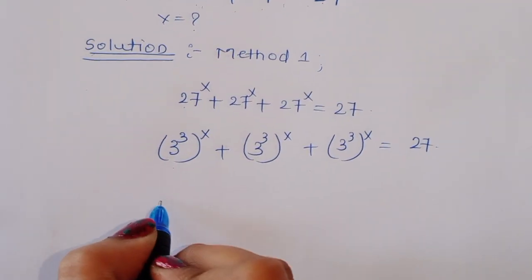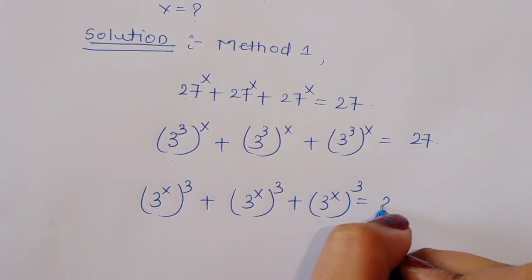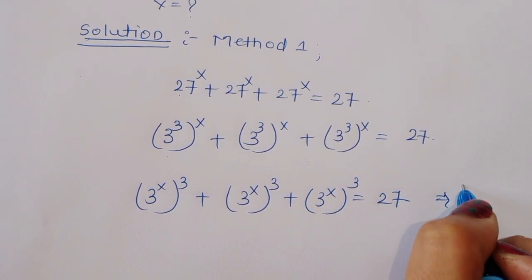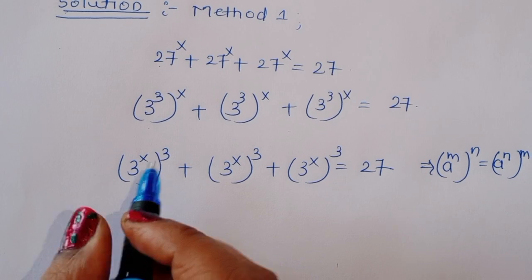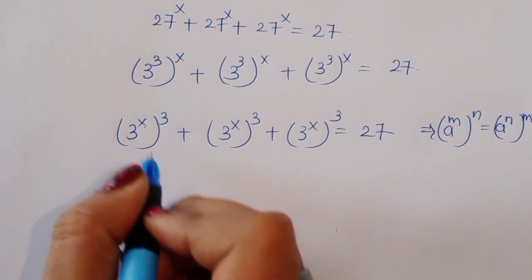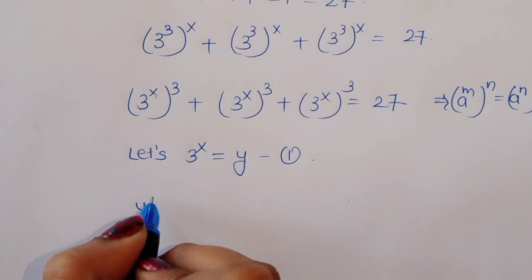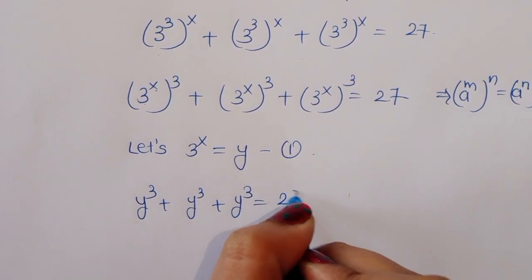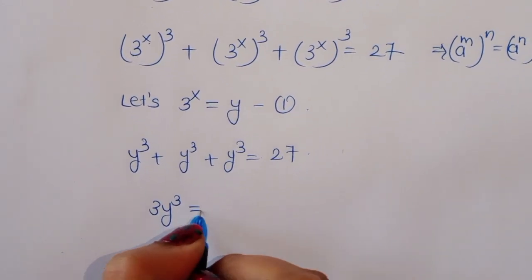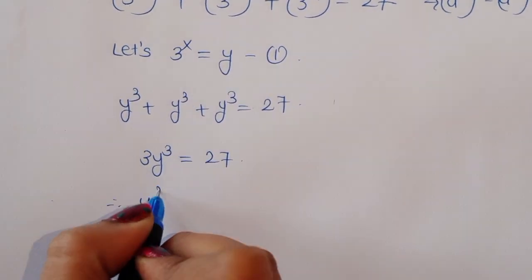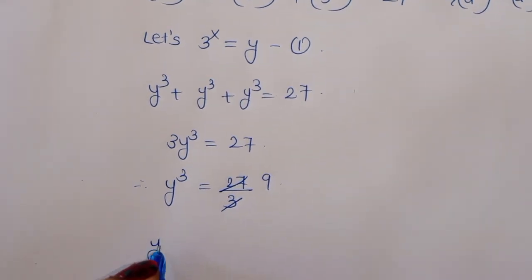Now we can write this as 3 power x power 3 plus 3 power x power 3 plus 3 power x power 3 is equal to 27, because we know the formula a power m power n equals a power n power m. So here we have three terms of 3 power x, all cubed, equal to 27.